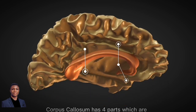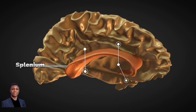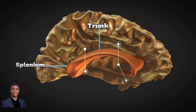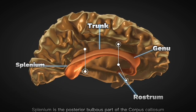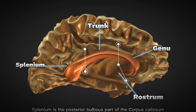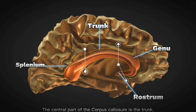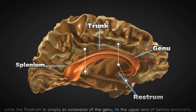Next, we will be talking about the other parts of the corpus callosum. The corpus callosum has four parts: the splenium, trunk, genu, and rostrum. The splenium is the posterior bulbous part of the corpus callosum. The central part is the trunk. The genu is the anterior part, while the rostrum is simply an extension of the genu to the upper end of the lamina terminalis.